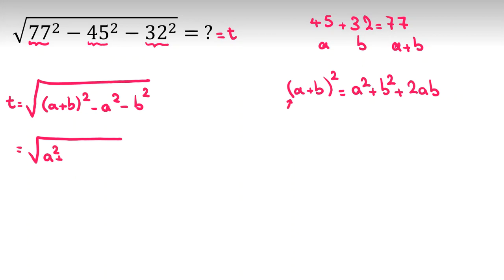it will be A squared plus B squared plus 2AB minus A squared minus B squared. We cancel A squared, we cancel B squared, so it will be root 2AB.